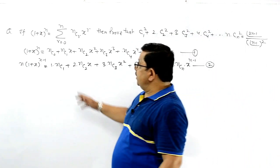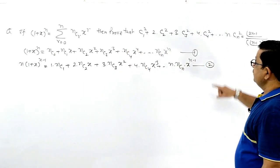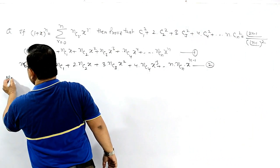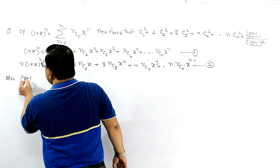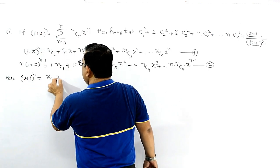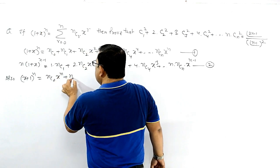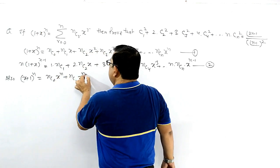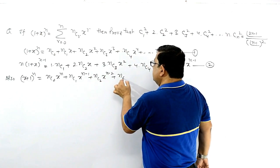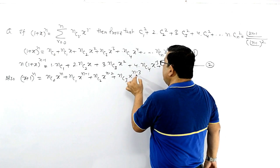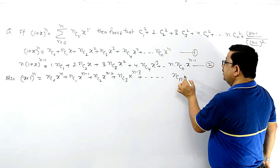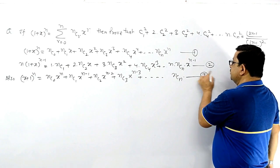This can also be written another way — we flip it. Also, (x+1)ⁿ equals nc₀·xⁿ + nc₁·x^(n-1) + nc₂·x^(n-2) + nc₃·x^(n-3) — written in decreasing order. Let's call this equation 3.